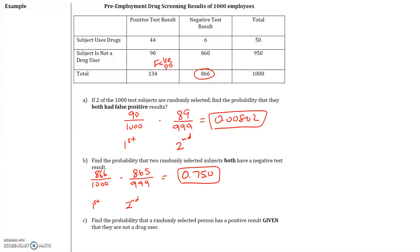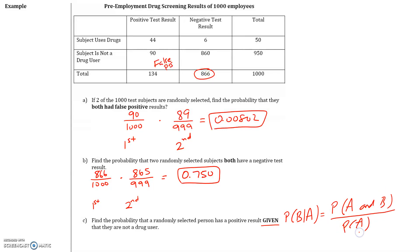Part C: find the probability that a randomly selected person has a positive test result given — and this is the key word — that they're not a drug user. So let's revisit conditional probability. The probability of event B occurring given that event A has already occurred is the probability of A and B over the probability of A. So our total is now limited to the probability of A, because we assumed that A has already occurred.